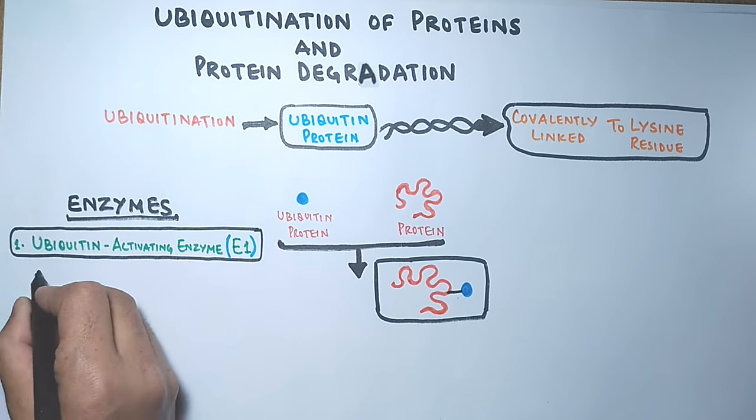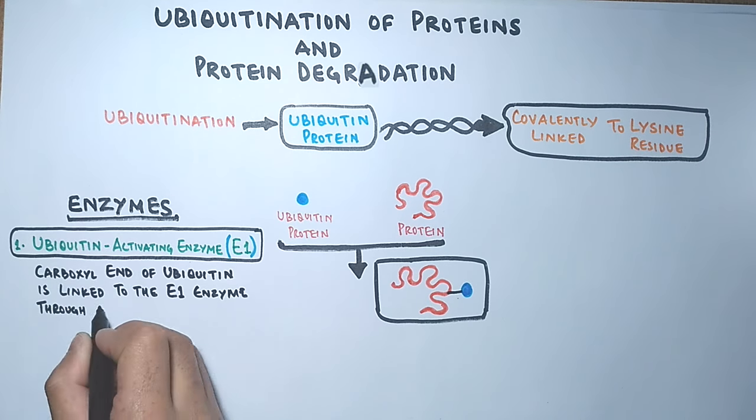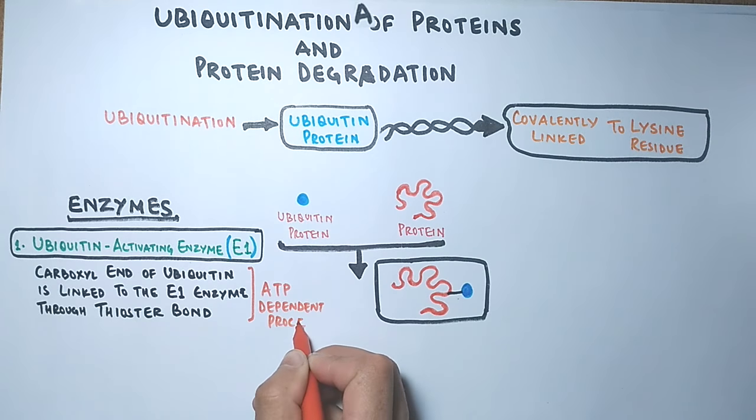This E1 enzyme links itself with the carboxyl end of ubiquitin through thioester bond, and this step is energy dependent so it needs ATPs.